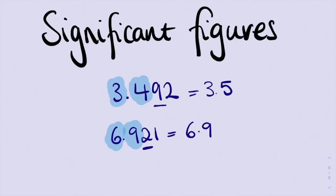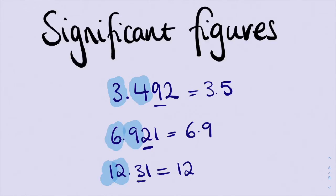If I have the number 12.31, and again I want it to two significant figures, so here's one significant figure, and that's the second significant figure. So we look at our critical digit — it's a 3. It's not going to change anything. So our answer is just 12.